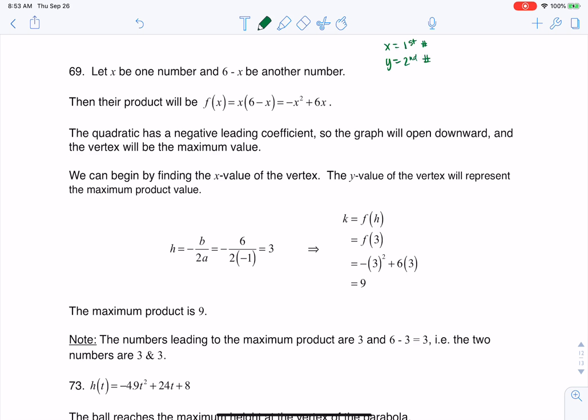I have a couple of constraints. I know x plus y is equal to 6, and then if I wanted to talk about their product, which is the thing I want to maximize, it's x times y.